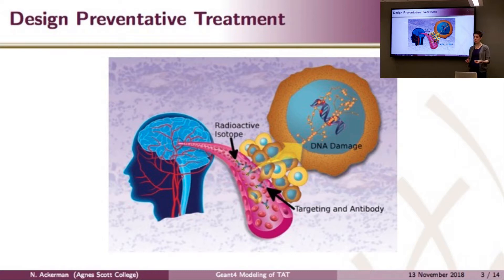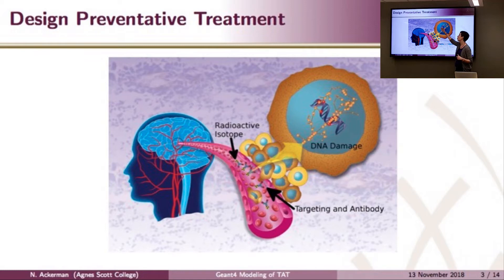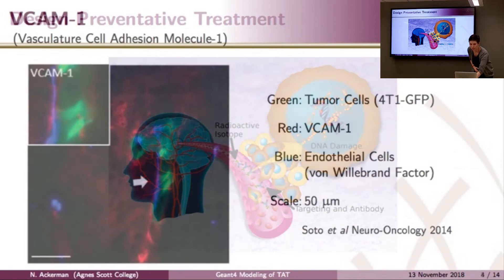I call this preventative because we have to be targeting the metastases before any symptoms are present and before there's any imaging possible to know that metastasis is forming. We would be injecting into patients who statistically are likely to develop metastases. So somewhere in the brain, cancer cells are leaving the blood vessel and going into healthy brain tissue surrounding the vessel. Our goal is to target something in the blood vessel itself — binding with antibodies a therapeutic that carries a radioactive isotope. When that radioactive nucleus decays, the radiation produced targets the cells right around the blood vessel and causes DNA damage.